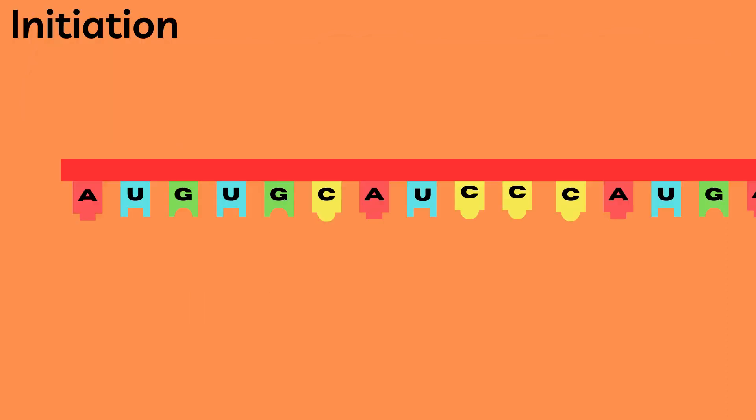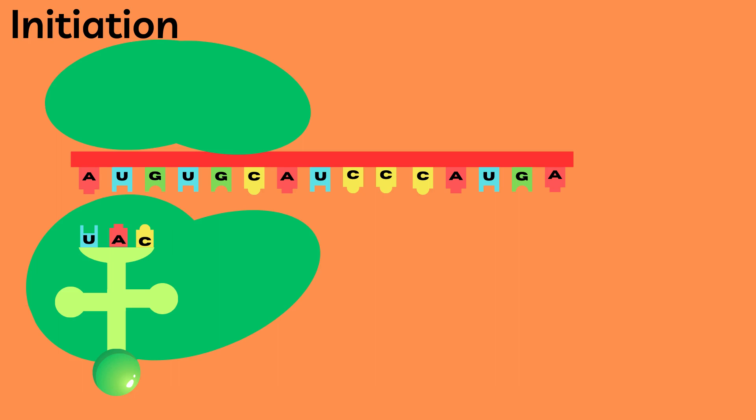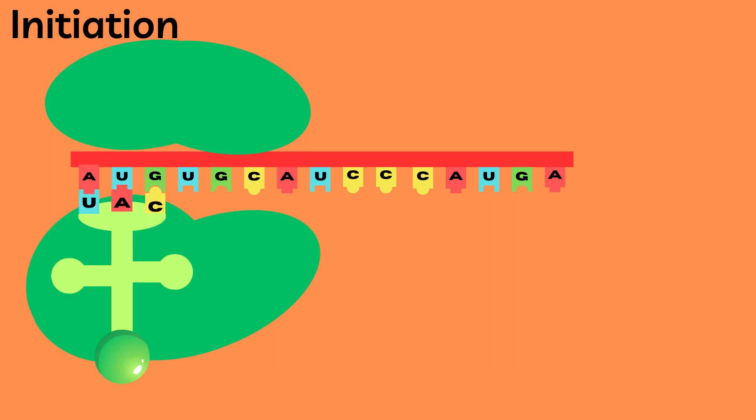First, during initiation, the two ribosomal subunits bind around the beginning of the mRNA strand. Then a tRNA, which carries an amino acid, enters the ribosome and with the help of its anticodon binds to the first codon of the mRNA.